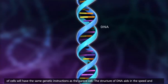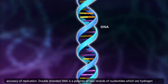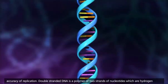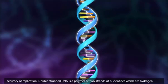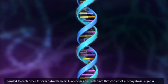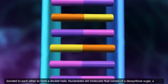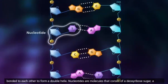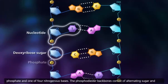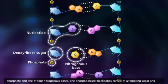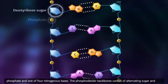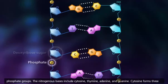The structure of DNA aids in the speed and accuracy of replication. Double-stranded DNA is a polymer of two strands of nucleotides, which are hydrogen bonded to each other to form a double helix. Nucleotides are molecules that consist of a deoxyribose sugar, a phosphate, and one of four nitrogenous bases. The phosphodiester backbones consist of alternating sugar and phosphate groups.